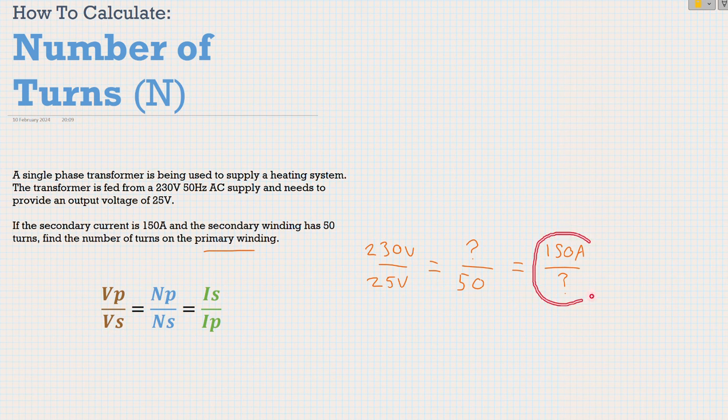This 150 amps, they just give us in the question to throw us off a little bit. Extra information, we don't need that. We're asking to figure out this question mark here. So we need to know the number of turns primary. So let's transpose our formula to make number of turns primary the subject of the formula, using what we already know, which is the voltage primary and voltage secondary.